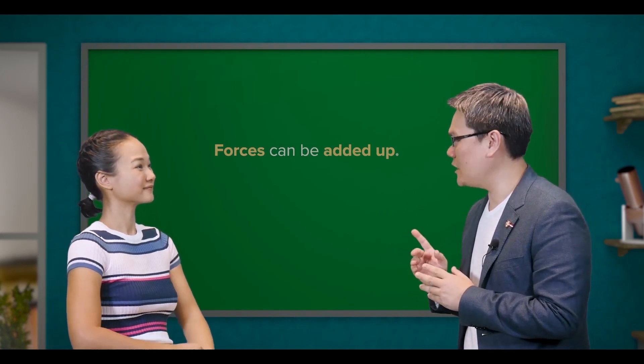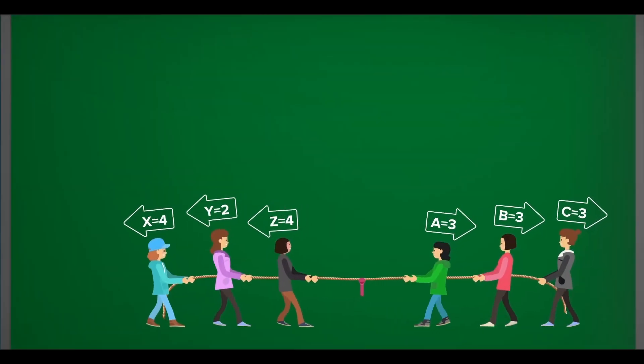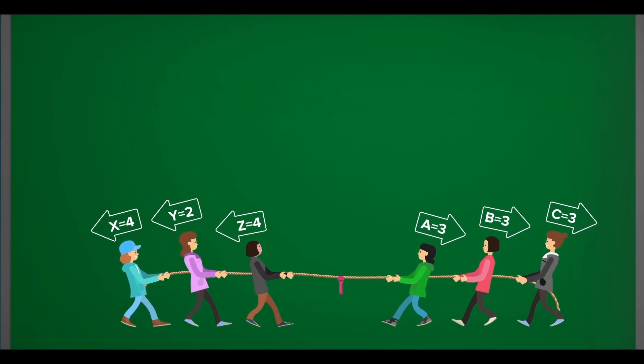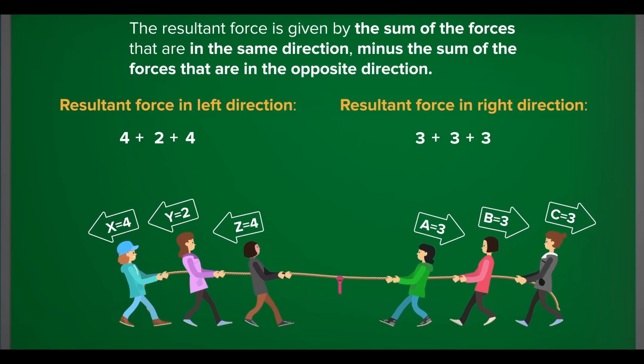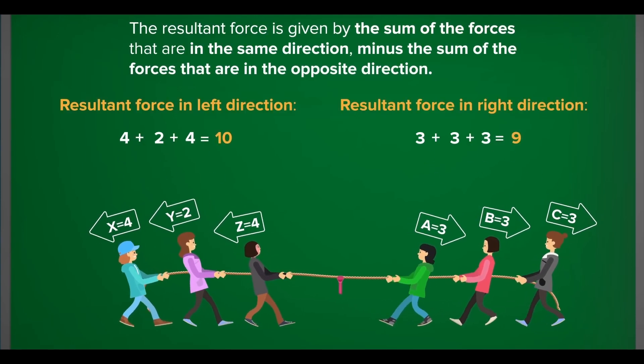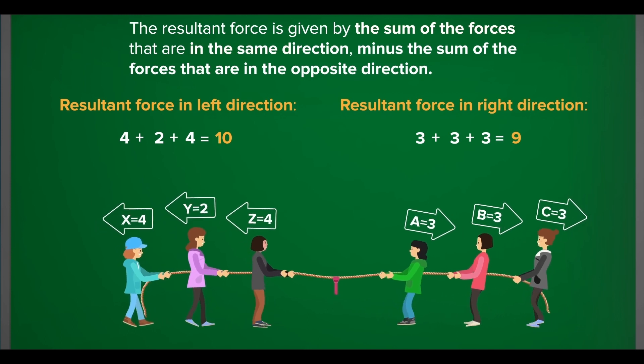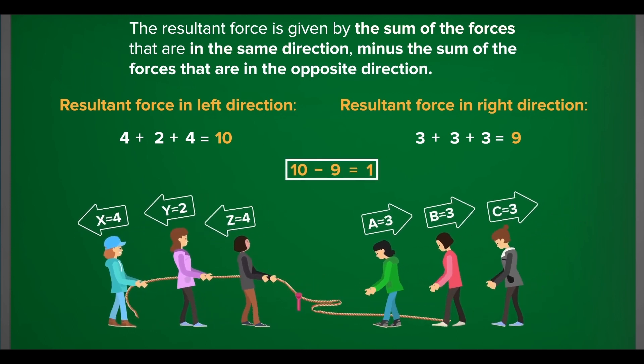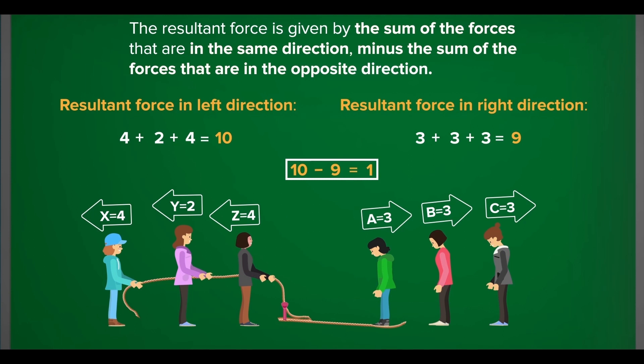Let's take a look here. When two or more forces act along the same line, the resultant force is given by the sum of the forces that are in the same direction, minus the sum of the forces that are in the opposite direction.